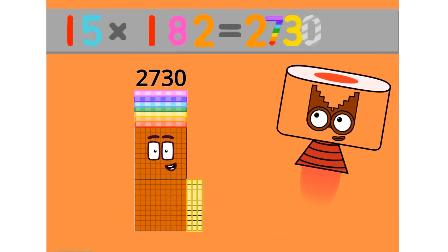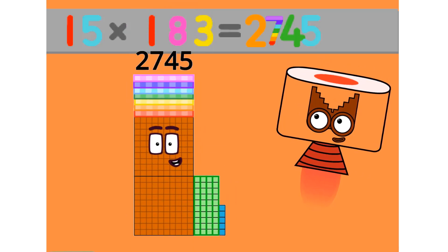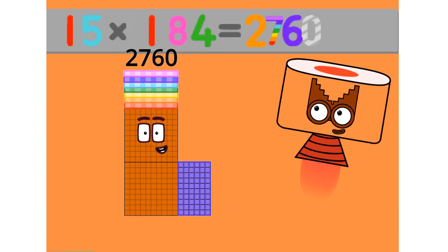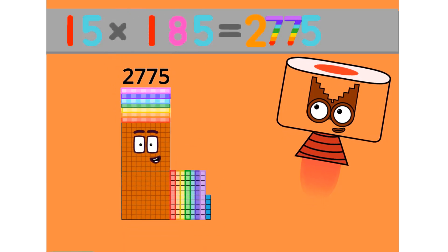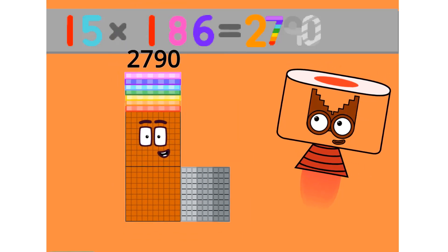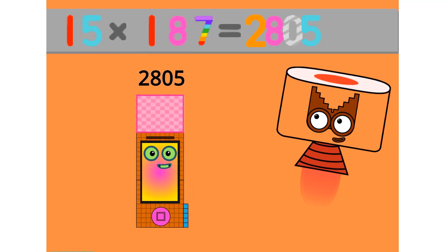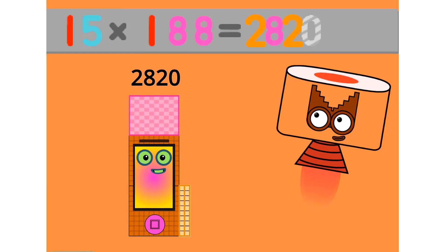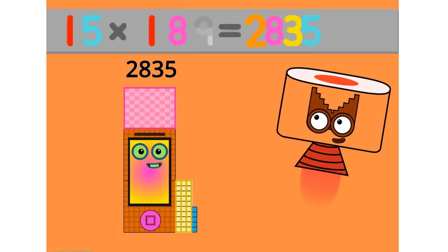15 times 182 equals 2730. 15 times 183 equals 2700. 15 times 184 equals 2760. 15 times 185 equals 2775. 15 times 186 equals 2790. 15 times 187 equals 2805. 15 times 188 equals 2820. 15 times 189 equals 2850.